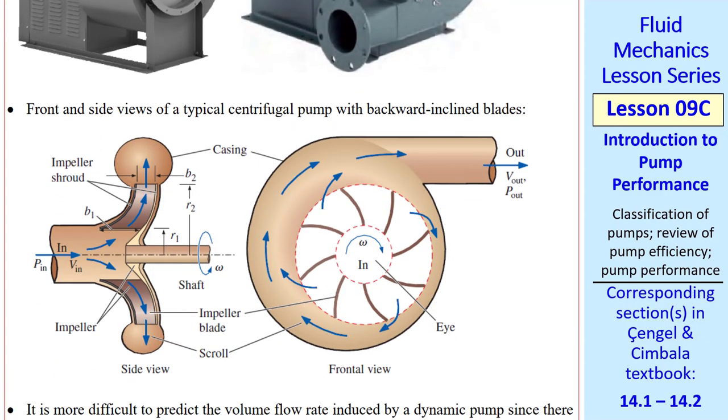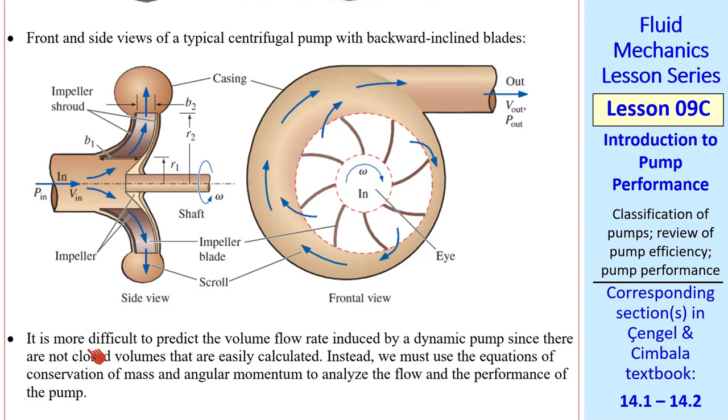Here are front and side views of a typical centrifugal pump. These have backward-inclined blades. In some other designs, the blades are straight or even forward-inclined. With a PDP, we had these closed volumes, and we easily calculated the flow rate. For a dynamic pump, it's much more difficult. We have to use equations of conservation of mass and angular momentum to analyze the flow and the performance of the pump.